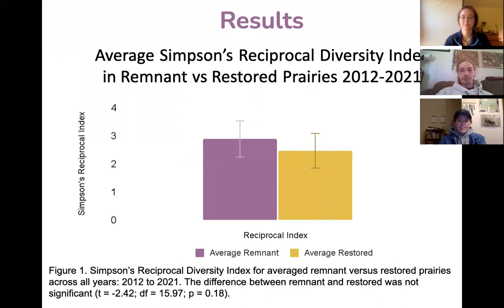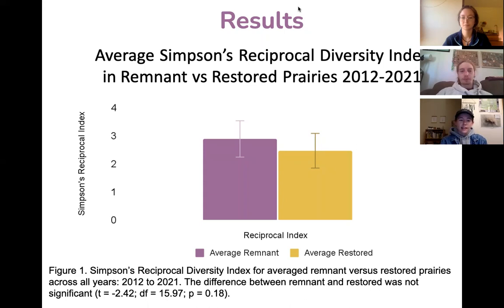To analyze our data, we looked at the Simpson's Reciprocal Diversity Index, which takes into consideration both species richness and evenness. In total, we had about a dozen or so remnant and restored sites. For our data analysis, we combined all remnant prairie sites together and all restored sites together for our years of data collection, which ranged from 2012 to 2021. We did not find a significant difference between restored and remnant prairies in terms of diversity, although remnant had a slightly higher diversity index, as you can see here on this graph.